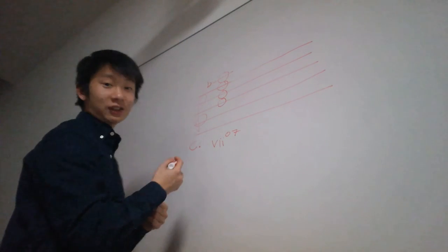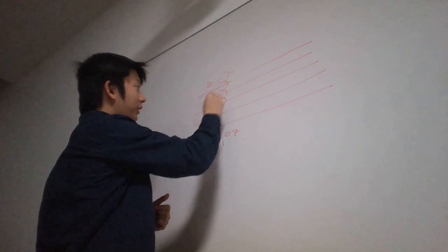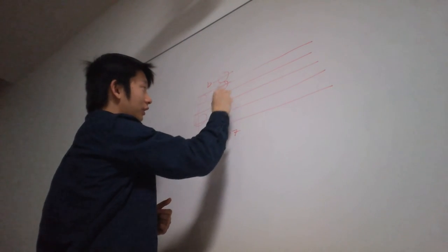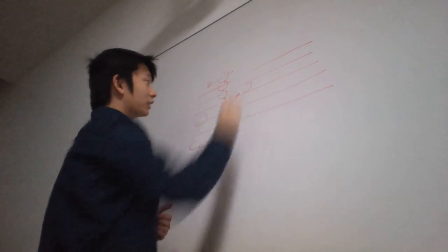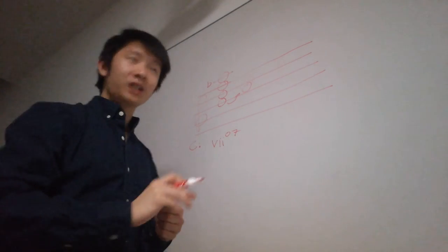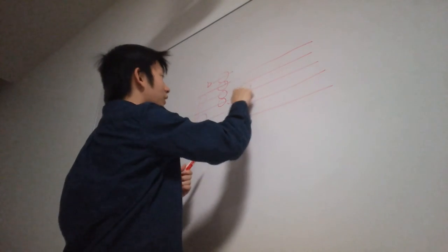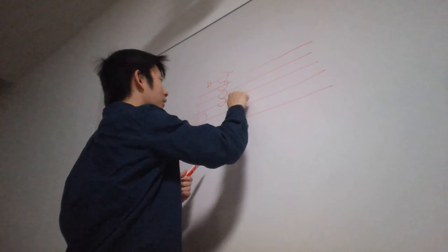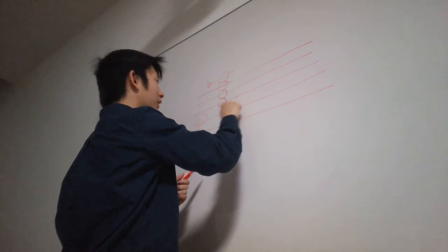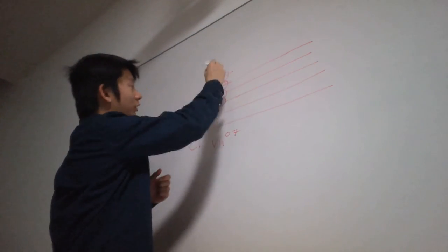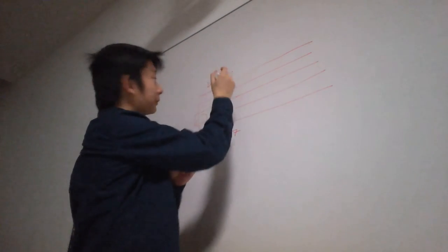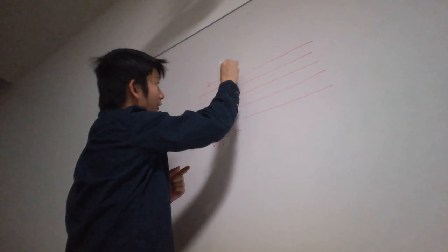So how can we do that in the key of C? Well, B is the leading tone to C. And because of this, we can mutate this B diminished chord to become the dominant of C. We can mutate it by lowering this top note down to G.